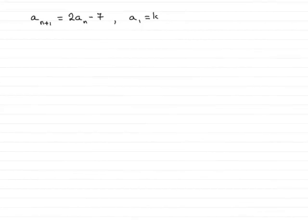Now, this question and part B are so quick that I'm going to do them in the one video. We're given the recurrence relationship A_(n+1) = 2A_n - 7, where the first term A_1 is k. We're asked to find in part A the second term.